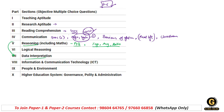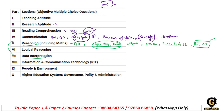Yahan par ek alphabet se related sequence waala question pucha gaya tha. Ek number series ka bilkul basic question tha - 2, 4, 8, 16, 32. Ek simple interest aur compound interest ka mixed question bhi pucha gaya tha. Toh percentage, average, ratio ke saath saath aap log is topic ko bhi zaroor include karke jaiyega.